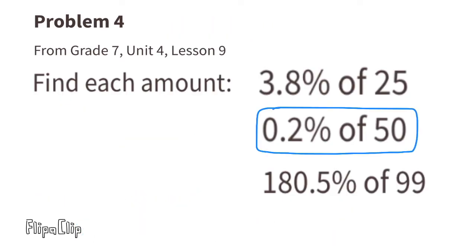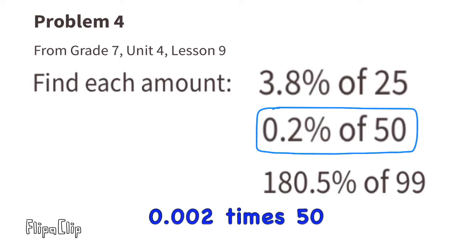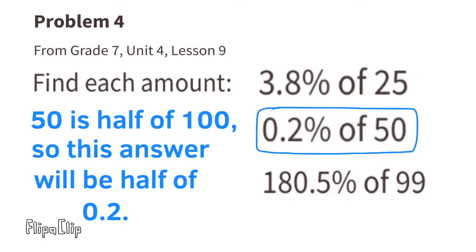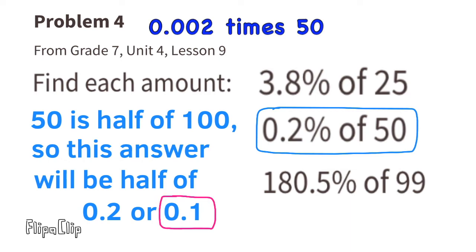0.2% of 50 — you could multiply 0.002 × 50, but since 50 is half of 100, the answer will be half of 0.2. Half of 0.2 is 0.1. So 0.2% of 50 is 0.1 — the same answer as multiplying 0.002 × 50.